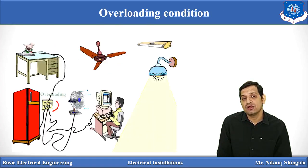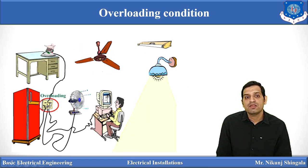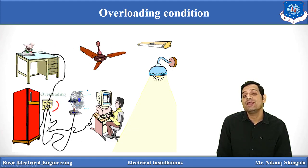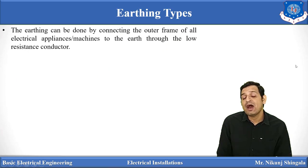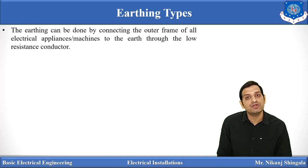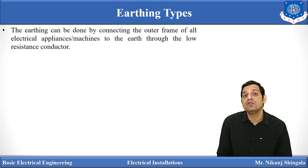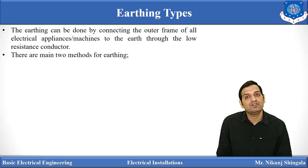When overloading occurs, you can see that a number of devices are connected on a single switchboard, so overloading can occur. There are two types of earthing. Earthing can be done by connecting the outer frame of all electrical appliances or machines to earth through a low resistance conductor. The conductor used for earthing should have low resistance, and we should make arrangements to decrease that resistance as much as possible. The two types of earthing methods are: pipe earthing and plate earthing.